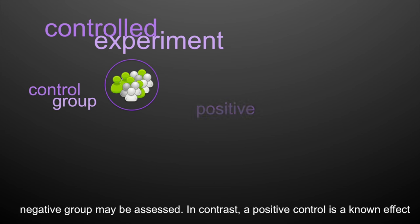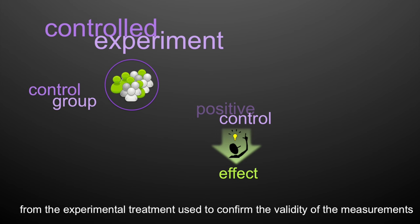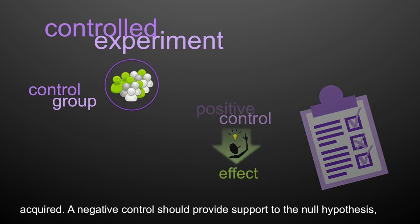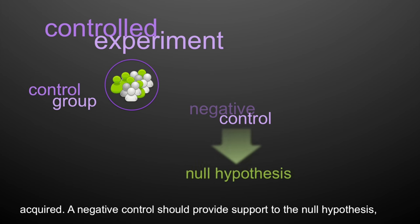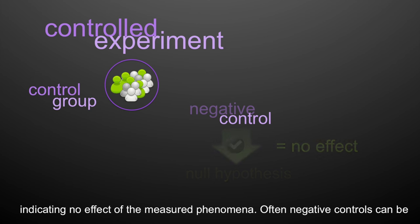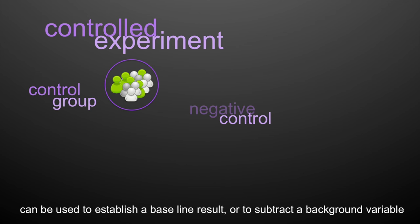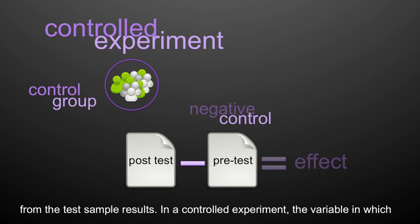In contrast, a positive control is a known effect from the experimental treatment, used to confirm the validity of the measurements acquired. A negative control should provide support to the null hypothesis, indicating no effect between the measured phenomenon. Often negative controls can be used to establish a baseline result, or to subtract a background value from the test sample results.